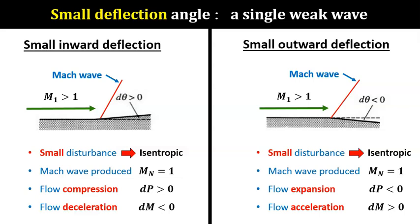On the other hand, the small outward deflection produces the reverse, a very small flow expansion of negative dp and a very small flow acceleration of positive dm.